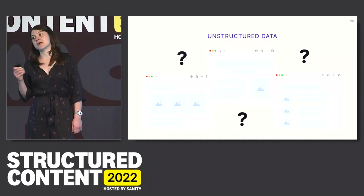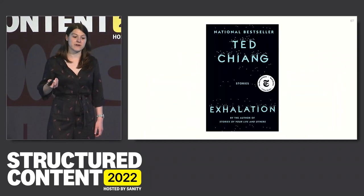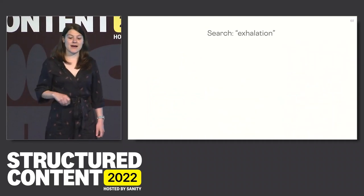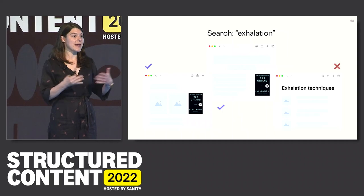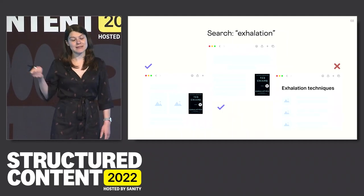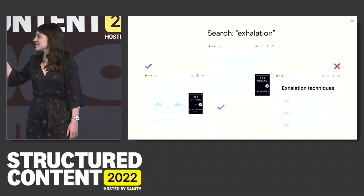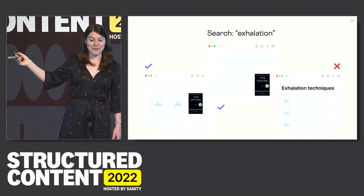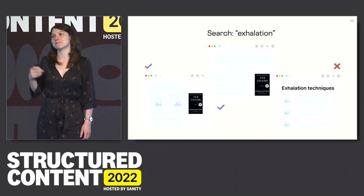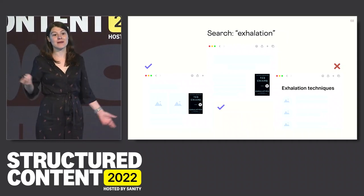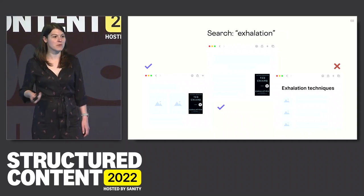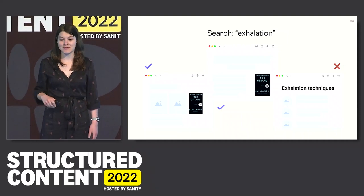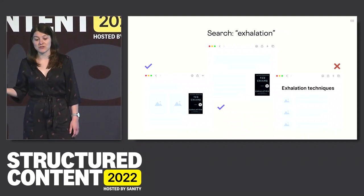Let's say I want to search for the book Exhalation by Ted Chiang — great read. If I search the term 'exhalation' in any search engine, I'm going to get some results that are about the book, but I also might get results that are about breathing techniques or medical conditions. The computer doesn't know the difference between exhalation the book and exhalation the biological concept, because these websites aren't built with structured data.